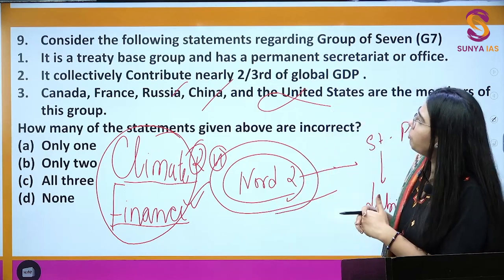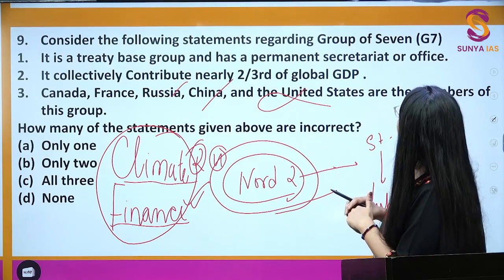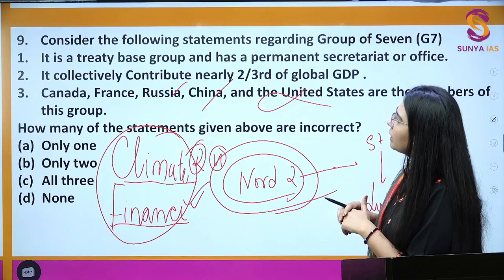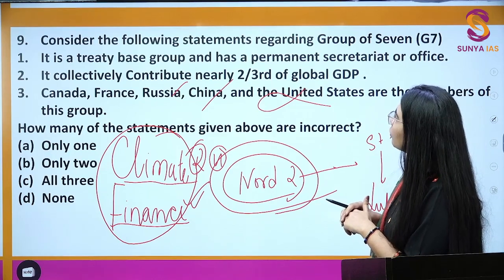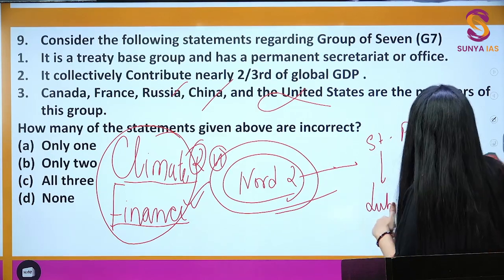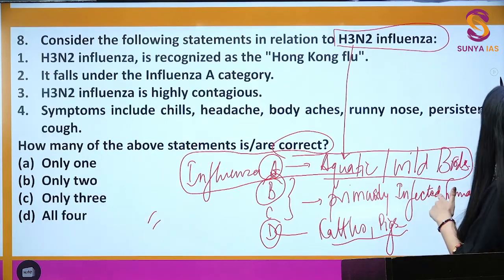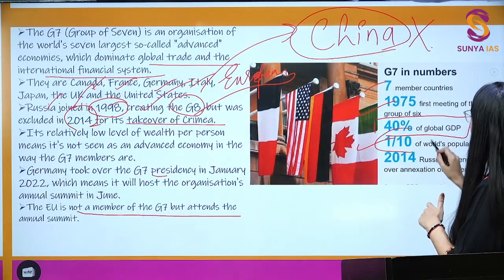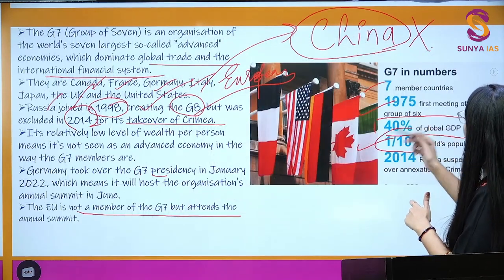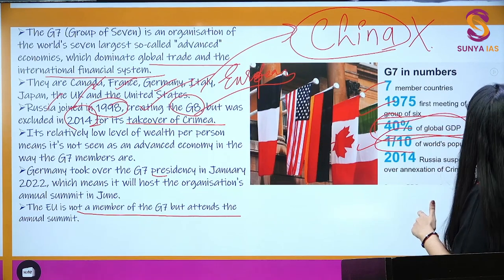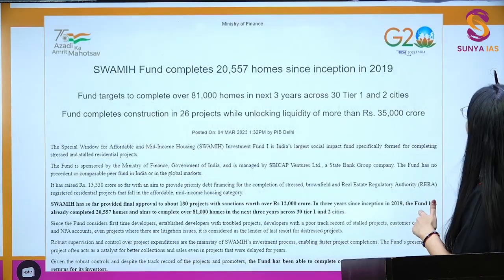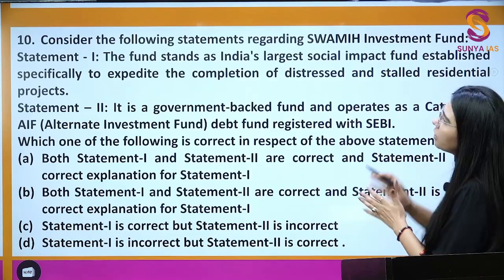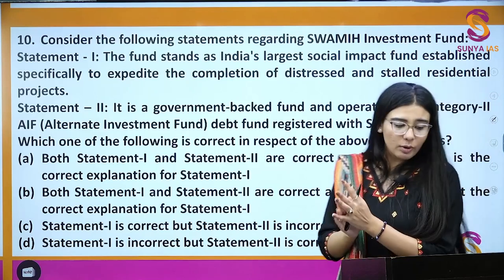Looking at the question: the first statement says G7 collectively contributes nearly two-thirds of global GDP — this is wrong, as it is approximately 40% of global GDP. So the first statement is incorrect.